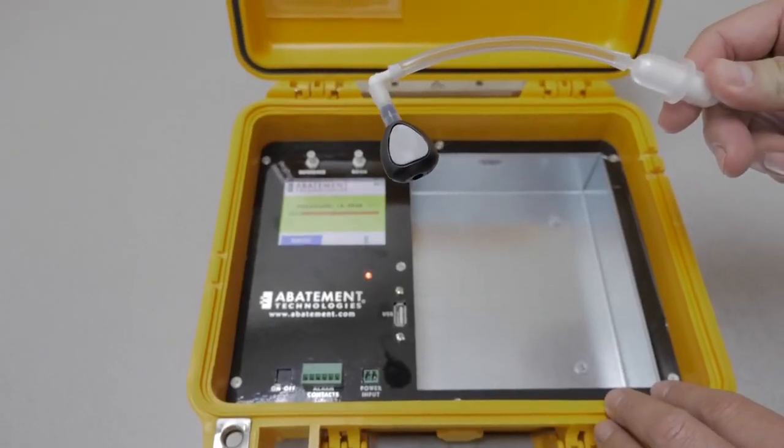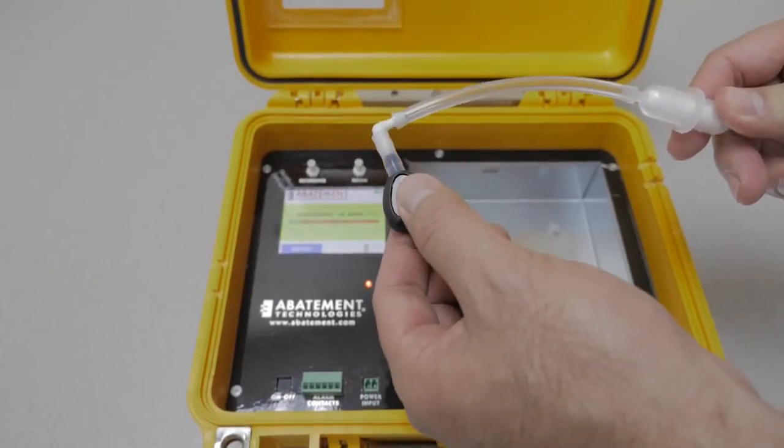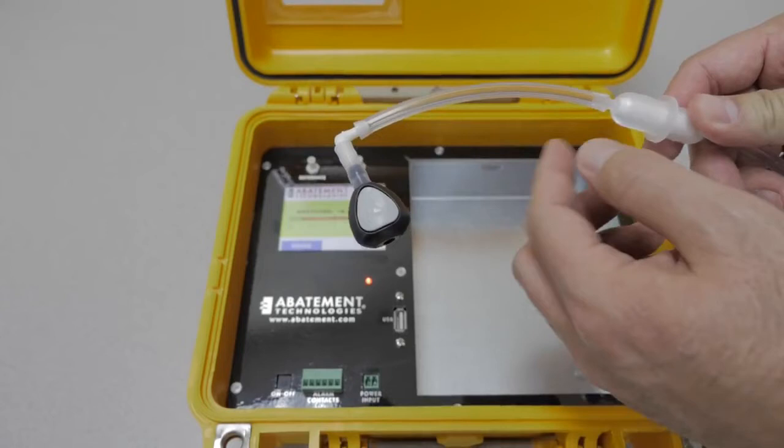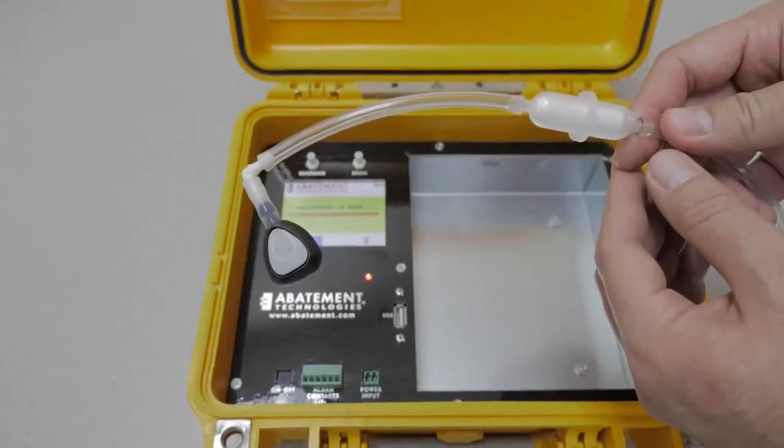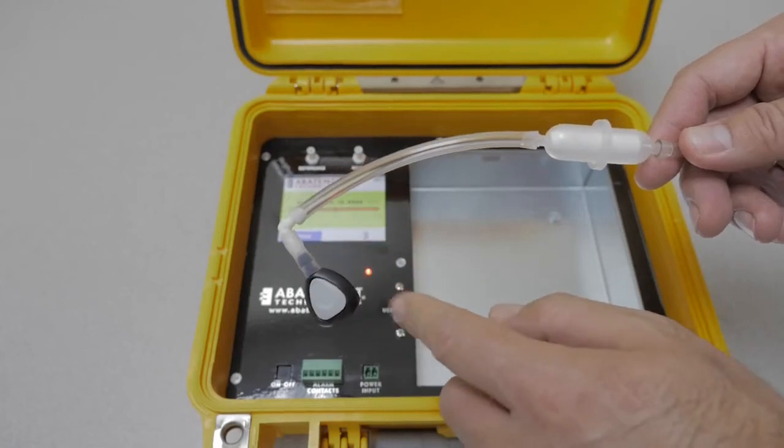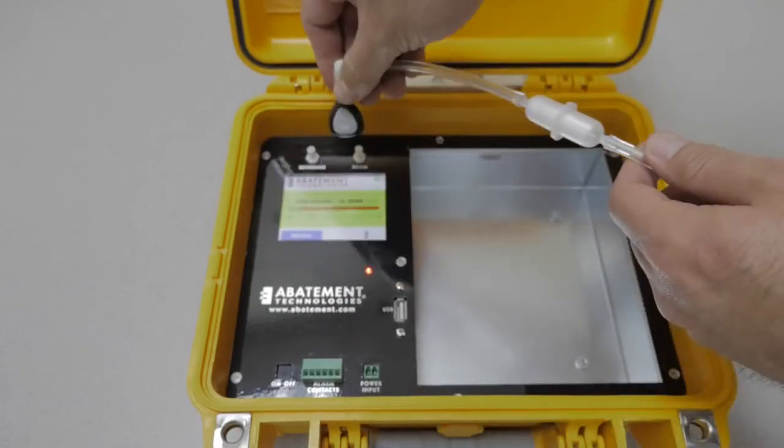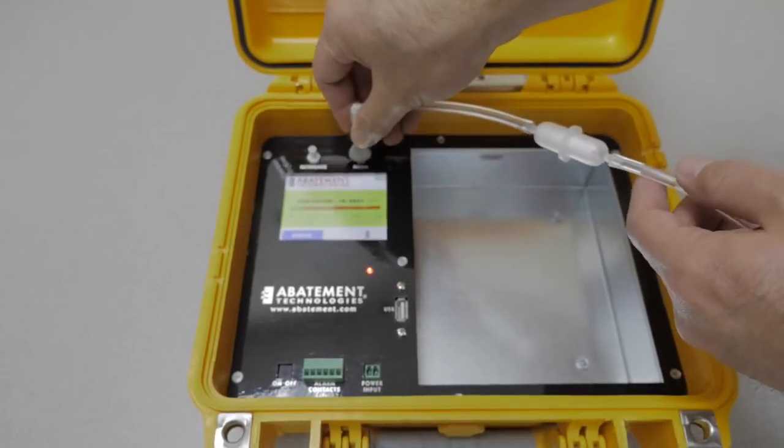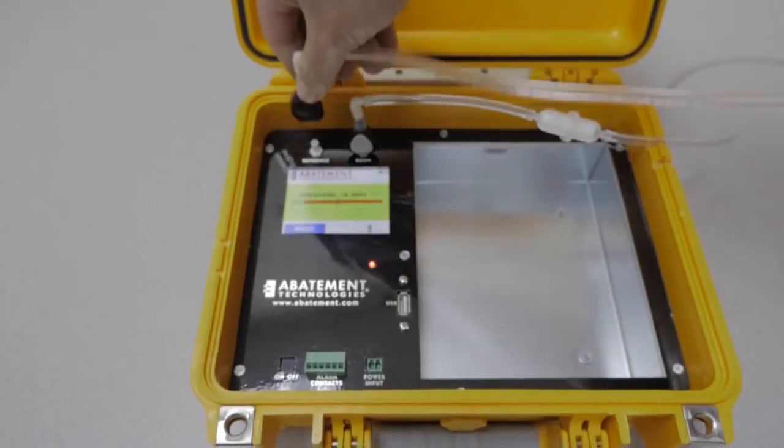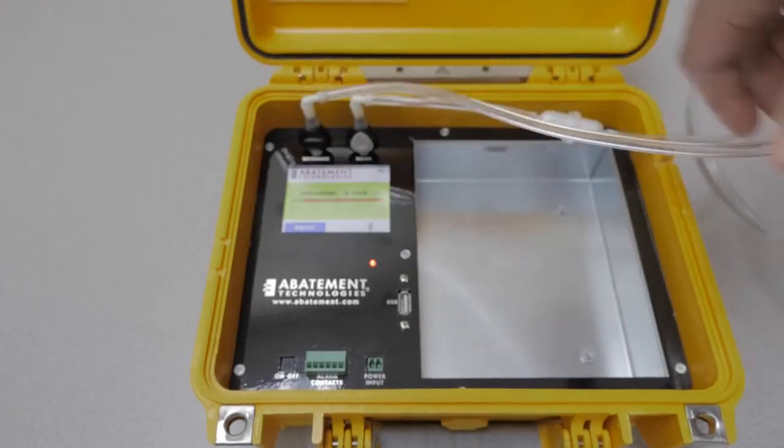To set up the monitor for negative or positive pressure monitoring, the quick connect connects directly to the monitor. Attach your tubing to the quick connect. Make sure that the arrow on the filter is pointed towards the monitor. Then just snap the tubing onto one of the ports. Repeat the same procedure for the other tubing.